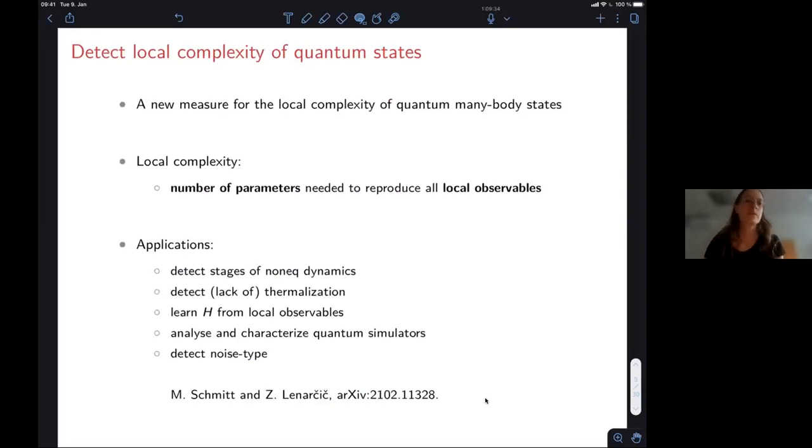So the main objective of our work and also this talk will be how can we detect and characterize local complexity of quantum states. We've done an attempt for this using machine learning with neural networks. What I mean by this kind of local complexity is really whatever can be detected with some local measurements, and to characterize it we'll simply ask, for example, how many parameters we need to reproduce all local observables that we would measure.